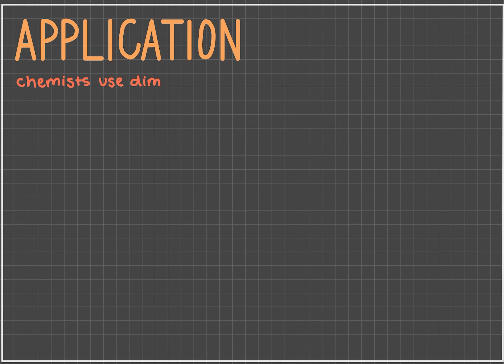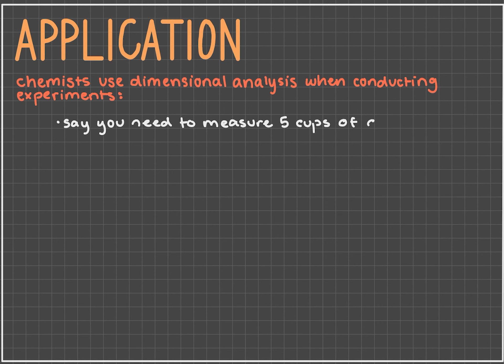How do chemists use dimensional analysis in their jobs? And why is it important? Well, dimensional analysis is super helpful when conducting experiments. Say you need to measure out five cups of a substance into a beaker, but you only have a quart-sized container to measure the substance with. By using dimensional analysis, you can convert five cups into quarts and get 1.25 quarts.